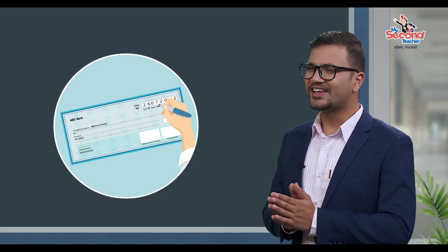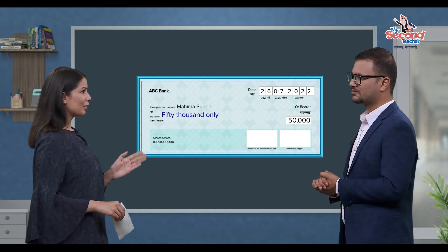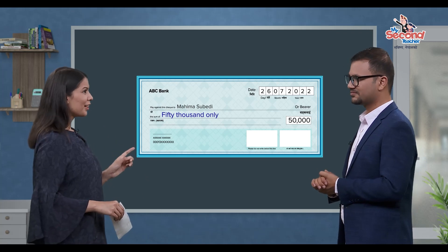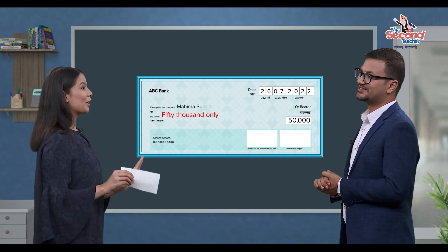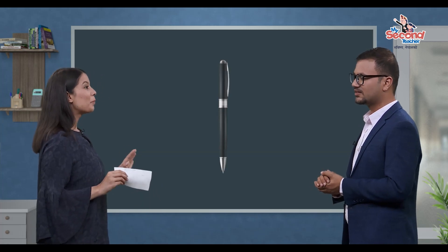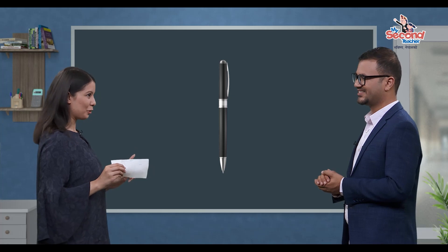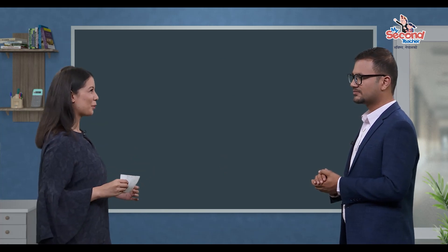The check should be written in the same ink throughout. If black ink is used in one place and blue ink in another, the bank may dishonor the check. The same ink should be used consistently. A check written in different inks is not acceptable to the bank.